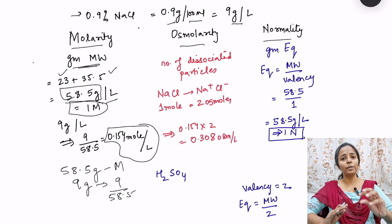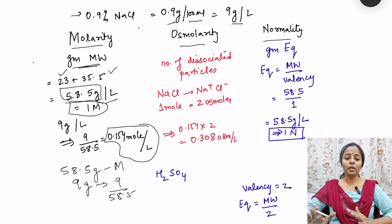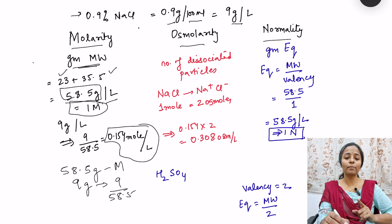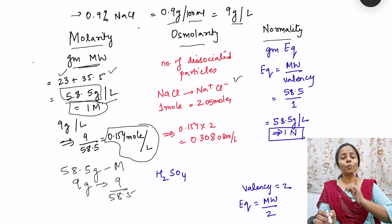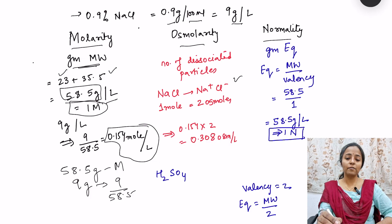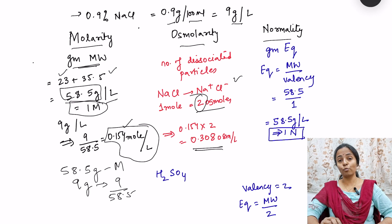Just by knowing how much NaCl is dissolved in a given volume, we can calculate the number of moles. Now to calculate osmoles — osmoles is the number of dissociated particles. So we multiply the moles by the number of dissociated particles. NaCl dissociates into sodium and chloride ions, giving two osmoles per mole. Multiplying 0.154 by 2, we get 0.308 osmoles per liter.